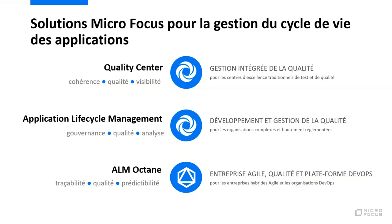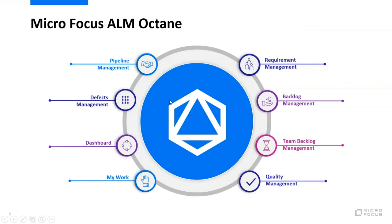Octane, au-delà d'être capable de gérer ces types de projets, va également être capable de gérer les projets agiles qui ont une certaine spécificité. On va retrouver beaucoup de visual management, la gestion des backlogs, et tout ce qui peut faire l'attrait d'un outillage dans une initiative DevOps. À ceci on va additionner la vision qualité, héritage de Quality Center et d'ALM, pour proposer un outil qui gère à la fois les projets agiles et la qualité.